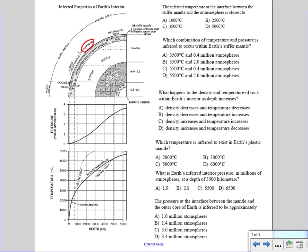Right underneath the lithosphere you have the asthenosphere, also known as the plastic mantle. This is where convection currents occur — convection occurs within the plastic mantle or asthenosphere. Underneath that you have the stiffer mantle, then the liquid outer core, and finally the solid inner core.